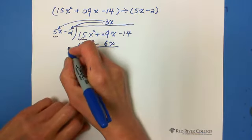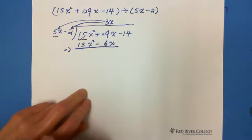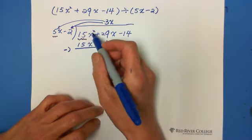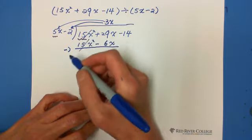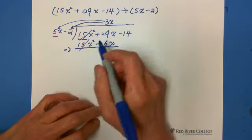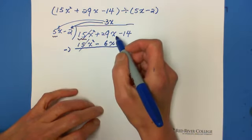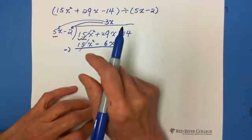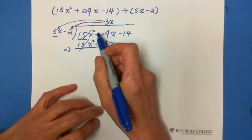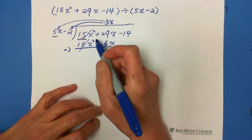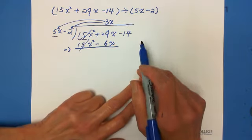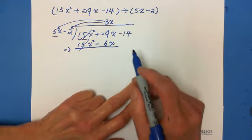Then subtract. And 15x² minus 15x² cancel out. 0 and 29x subtract 6x. That means be very careful. A lot of mistakes are made at this step. So that's why we can follow the subtraction with integer.